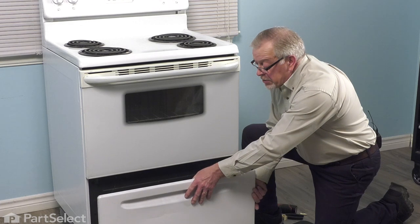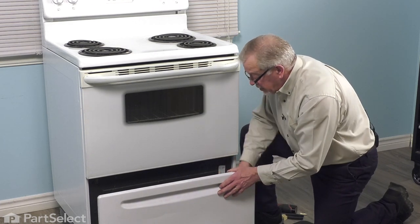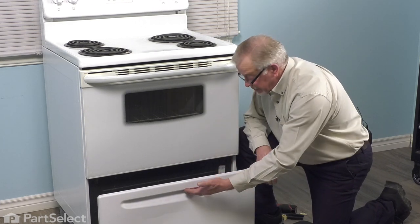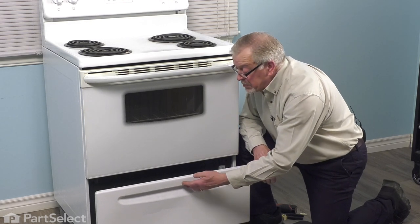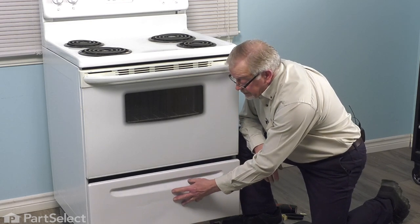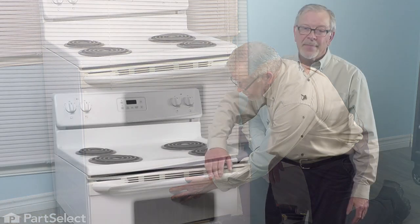You should not be able to tilt that drawer forward. If you can, that means that the bottom glides did not engage. Once we've done that, we simply need to push the drawer back into place. Now that the drawer slides easily again, we can put our items back in it, and your repair is complete.